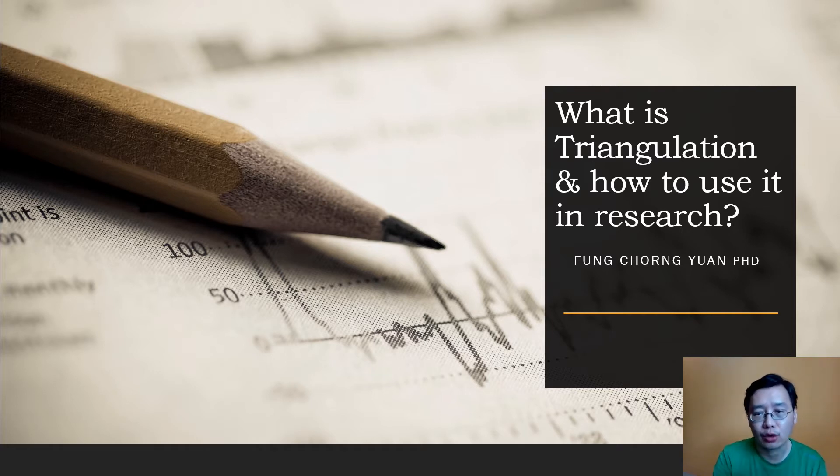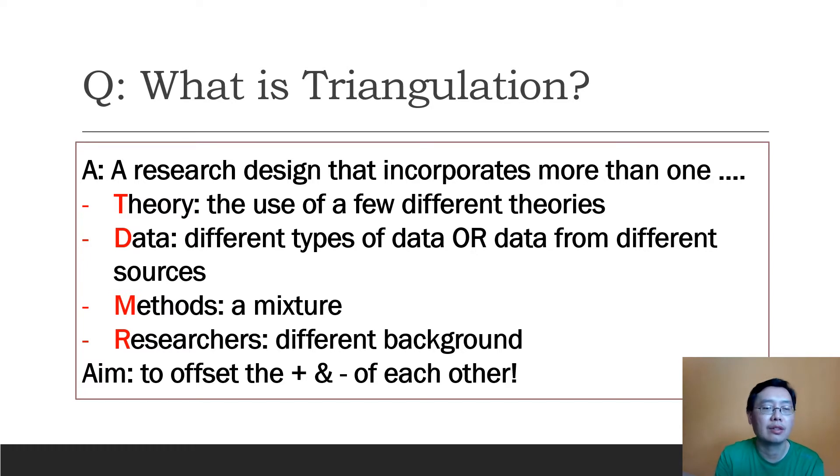Today we are going to talk about what is triangulation and how we can use triangulation in our research. Now what is triangulation? It is actually a kind of research design that incorporates more than one theory. You are using multiple theories to help you interpret a phenomenon or situation.